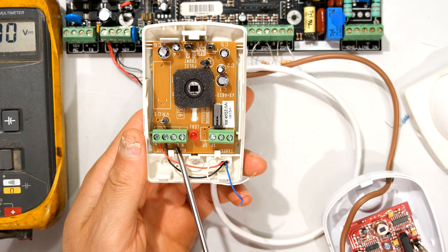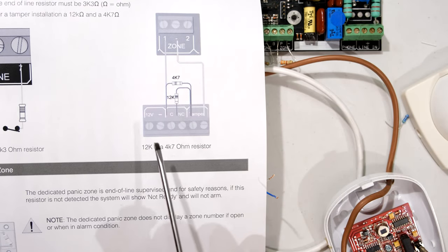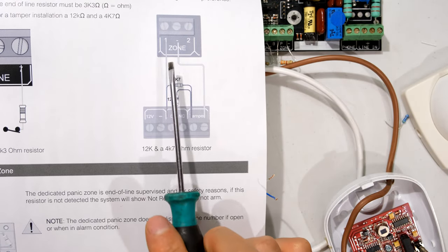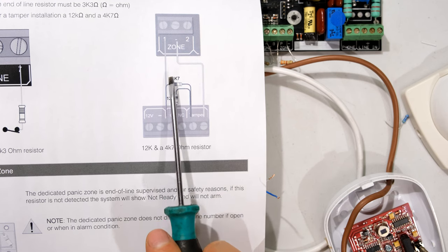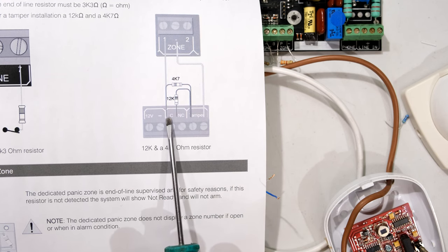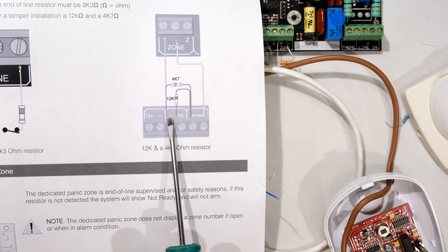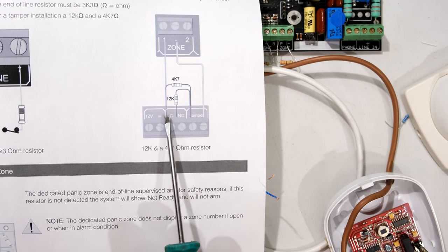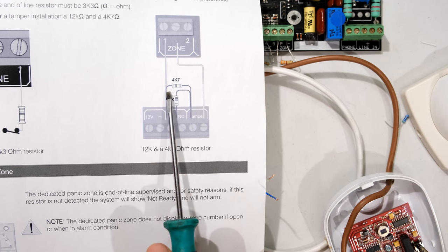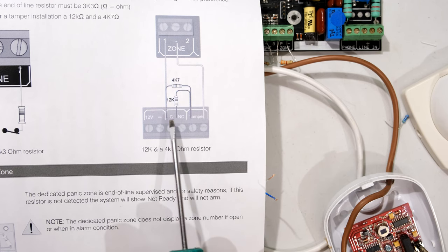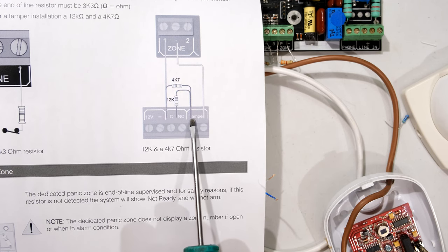Now the next terminals are the normally closed terminals. Having a look here you can see that from the zone the positive is going straight into the first connector of the normally closed terminal and also notice that there's a 4k7 resistor that links this terminal to the first wire of the tamper.